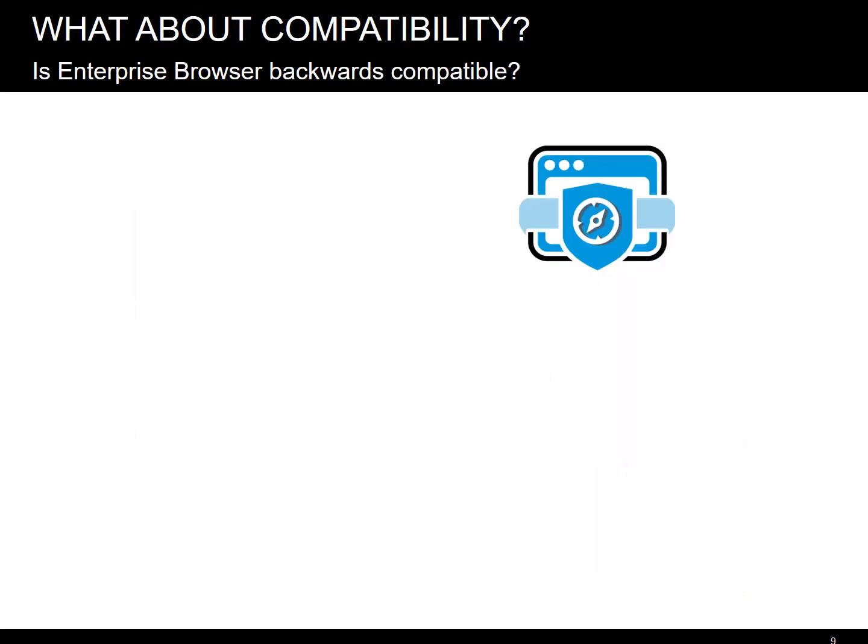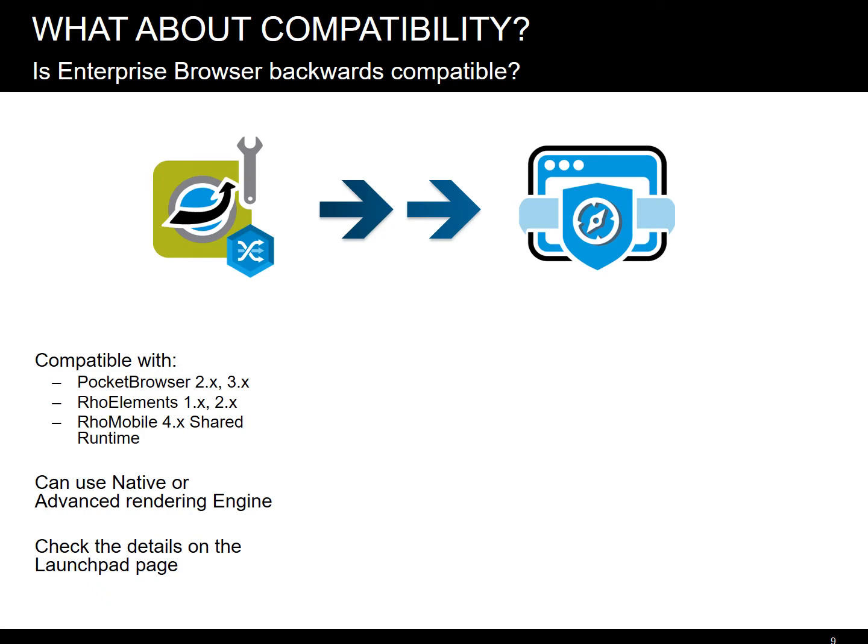In terms of compatibility, essentially you may think of Enterprise Browser as an evolution of our previous IE Internet Explorer-based Pocket Browser product, fitted with the modern engine, latest web features, and APIs from the Rho elements runtime. Thus, Enterprise Browser is compatible with all these products. Furthermore, when you have special concerns regarding Pocket Browser compatibility, you can even instruct Enterprise Browser to run the Pocket Browser IE-based rendering engine. This will ensure the most precise legacy simulation possible, but it limits your access to the newest modern web features that only WebKit offers.